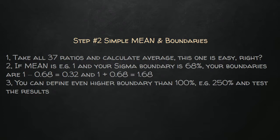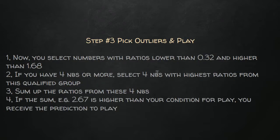As I said, you can define your boundary at even 100% from the average or even more. I also quite often use 350% as a boundary. Sometimes you may not have four numbers to play, but that's one way you can do it. And why do that? The third step is then to pick outliers and play with them.